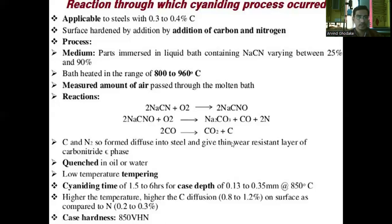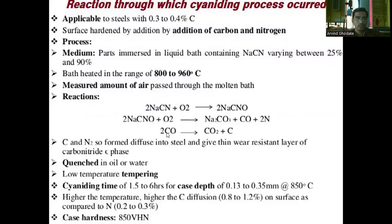The second reaction is: 2NaCNO + O₂ → Na₂CO₃ + CO + 2N. Then the third reaction is: 2CO → CO₂ + C. The carbon and N₂ so formed diffuse into the steel and give a thin wear-resistant layer of carbon-nitrogen phase. The nitrogen and carbon act on the surface of the metal.